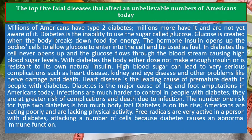Millions of Americans have type 2 diabetes; millions more have it and are not yet aware of it. Diabetes is the inability to use the sugar called glucose, which is created when the body breaks down food for energy. The hormone insulin opens up the body's cells to allow glucose to enter and be used as fuel. In diabetes, the cell never opens up and the glucose flows through the bloodstream, causing high blood sugar levels.